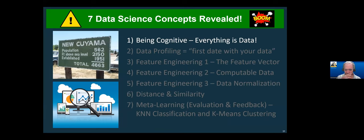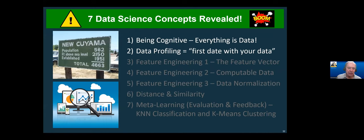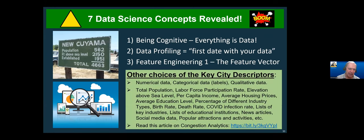The very first concept is recognizing that everything is data. Those numbers are meaningful — they tell you the population, the elevation above sea level (is it in a mountain range or a valley?), and how old the town is. Just recognizing and being aware of data in your world. Then data profiling — what I call having that first date with your data. Ask: what are these numbers? What are they telling me? Then there's feature engineering — these three numbers actually describe aspects of the town, but there are many other types of descriptors we can choose: education, housing, industry types, birth rate, death rate, key industries, educational institutions, social media information, news articles, popular attractions.